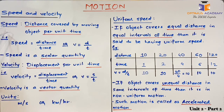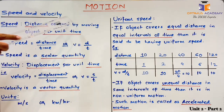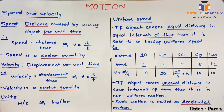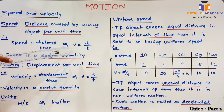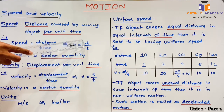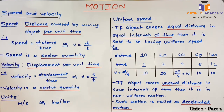Speed is defined as distance covered by a moving object per unit time. So in a unit time, how much distance that object covers gives us the speed of that object. Formula: speed equals distance upon time, or in symbolic form, V equals D upon T.